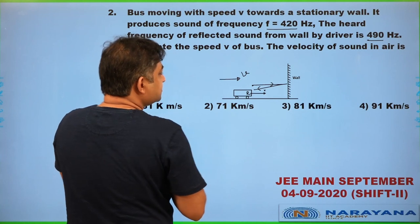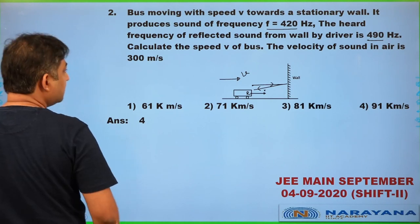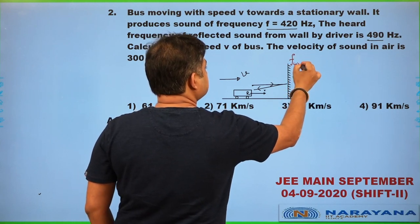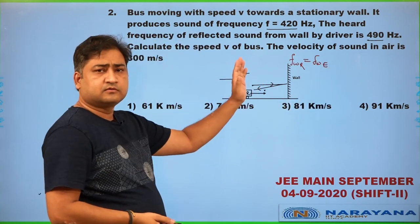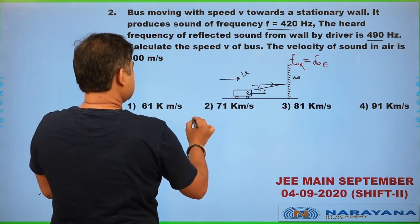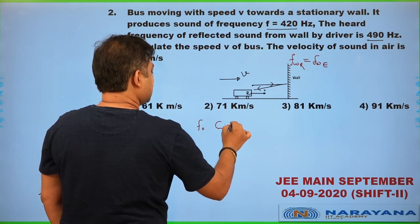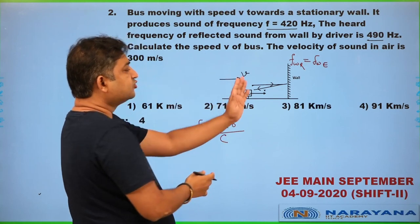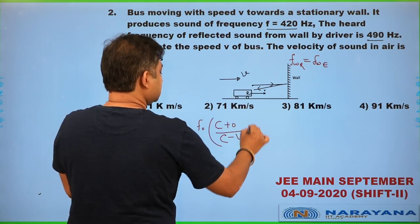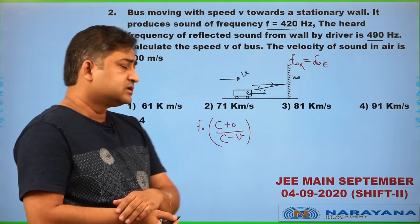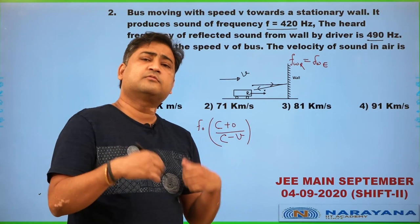Using the standard Doppler formula, the frequency received by the wall and the frequency emitted by the wall are going to be the same. The frequency received by the wall, as a stationary observer, is the actual emitted frequency multiplied by (c + 0) in the denominator — the wall is not moving. The car's movement tends to increase the frequency perceived by the wall, so we place velocity v accordingly. The same frequency is the number of waves falling on the wall per second, which equals the number of waves reflected per second.